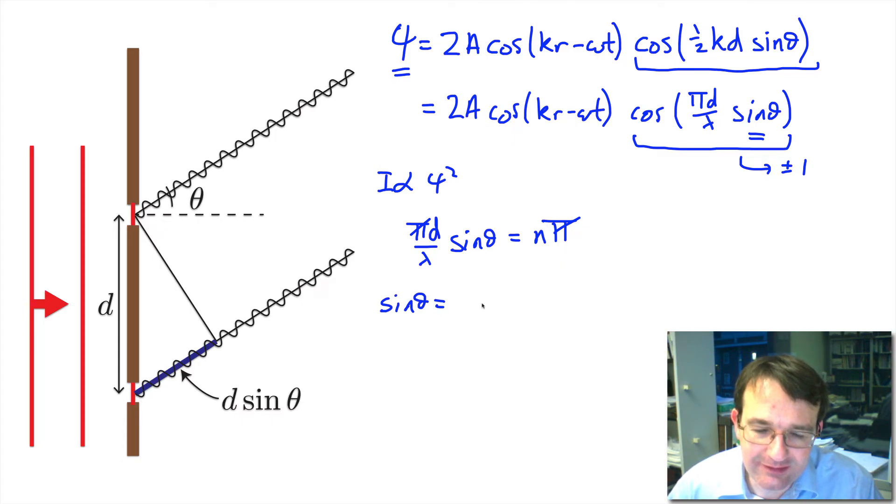I can cancel the pi on both sides and what I get is I will get a maximum in the pattern when sine theta is equal to n lambda over d, where n is equal to 0, plus or minus 1, plus or minus 2, and so on and so forth.